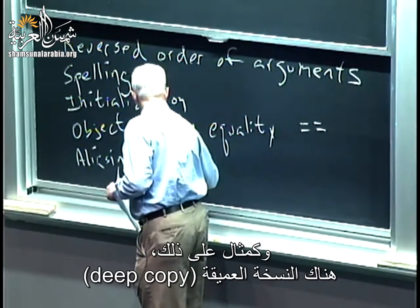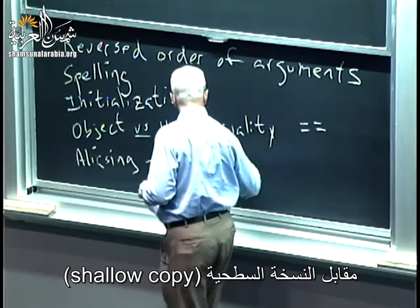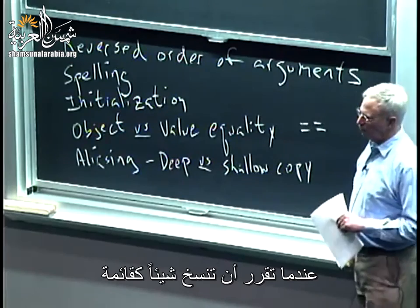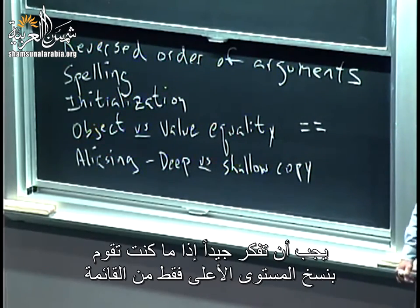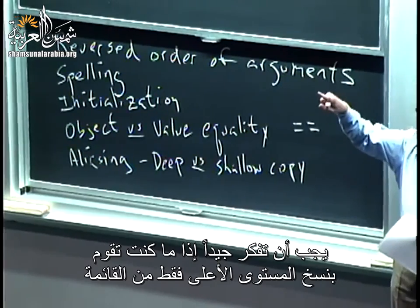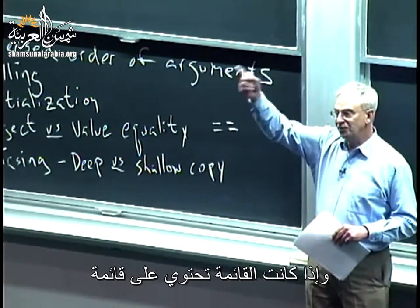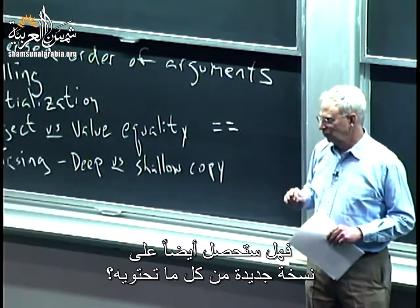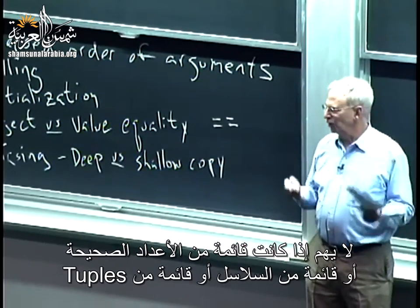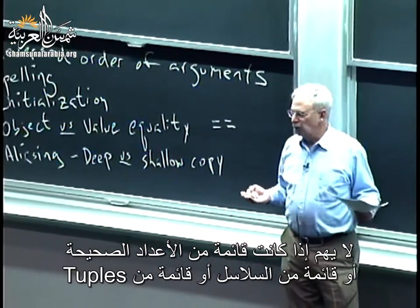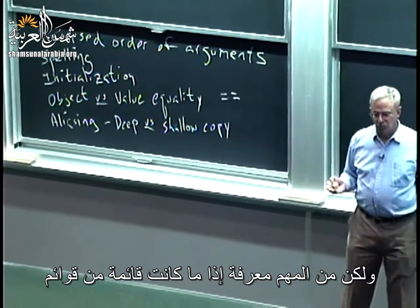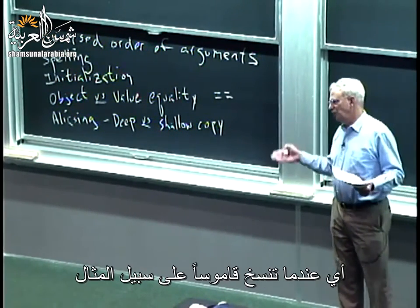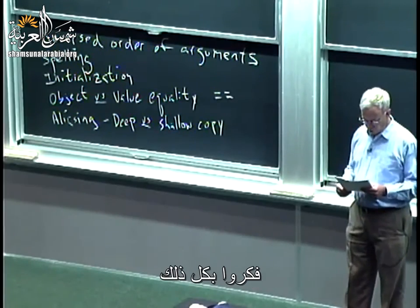A particular instance of that is deep versus shallow copy. When you decide to make a copy of something like a list, you have to think hard about whether you're only copying the top level of the list, or if it's a list that contains a list, whether you're also getting a new copy of everything it contains. It matters a lot if it's a list of lists or a list of anything mutable. When you copy a dictionary, think through all of that.